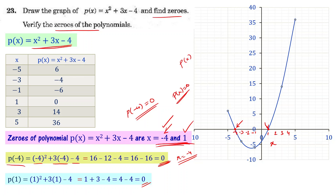So what we can say is we have verified the zeros of the given polynomial: −4 and 1. The value at x = 1 is also 0, as already seen in the table. This confirms the zeros are verified. Understood?